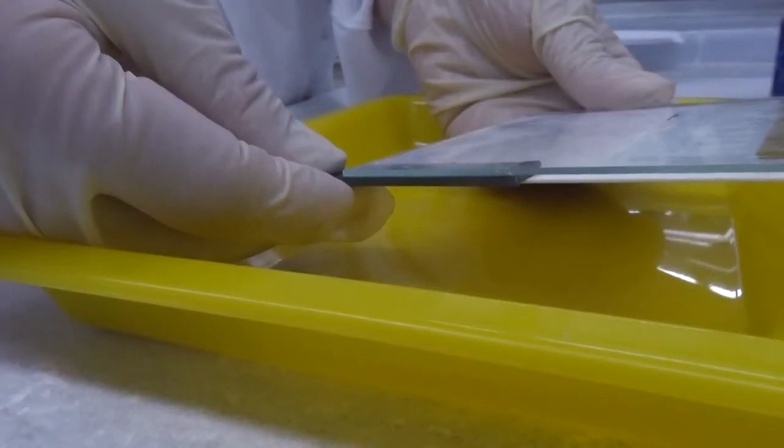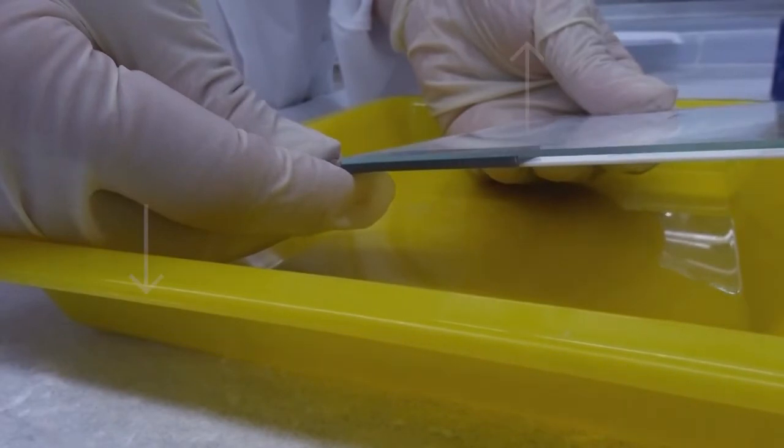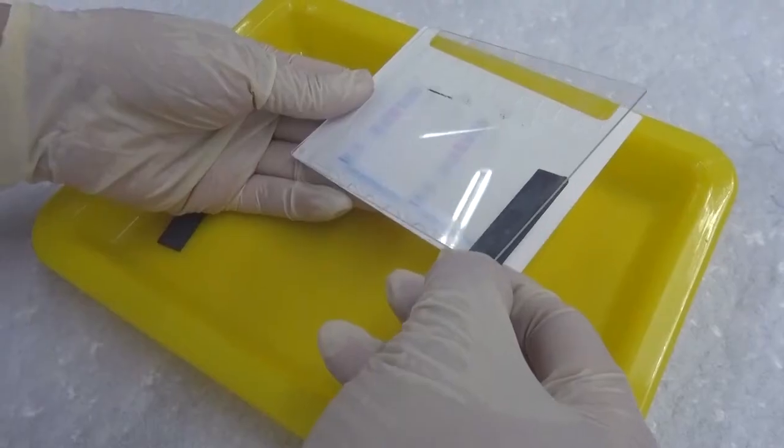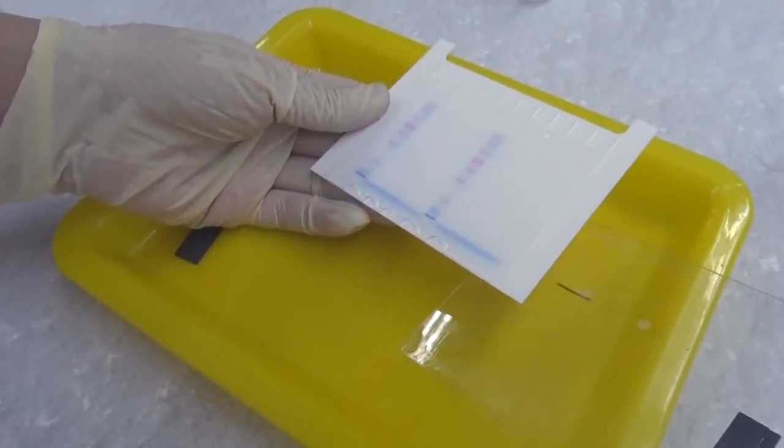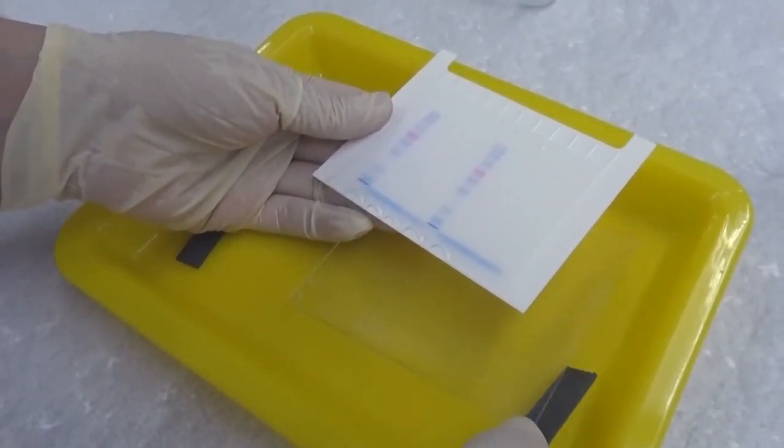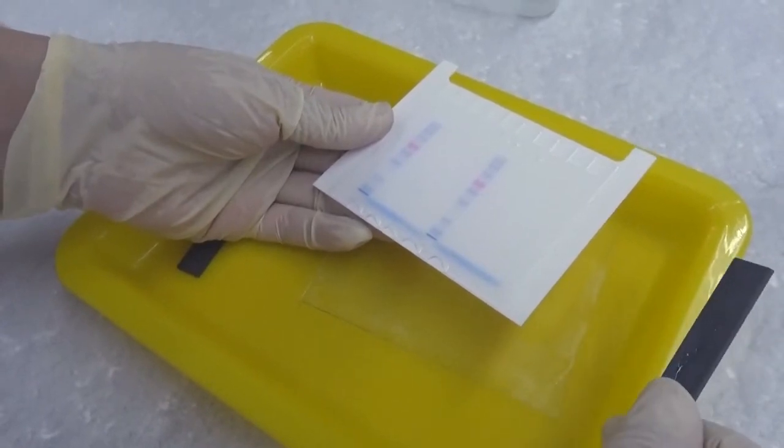Insert one spacer into a corner between the plates and use this as leverage to slowly separate and remove the glass plate. If you encounter difficulty, adding a few drops of distilled water or electrophoresis buffer may help.